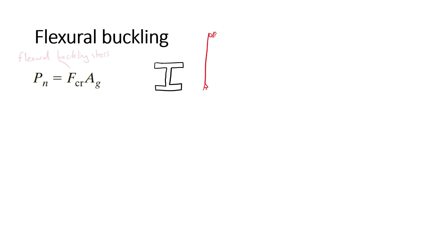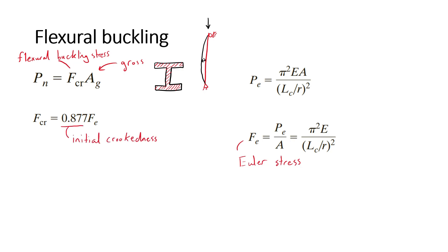Where FCR is the flexural buckling stress, AG is the gross cross-sectional area. FCR is not the theoretical Euler buckling stress FE, but rather multiplied by a reduction factor to account for initial crookedness.